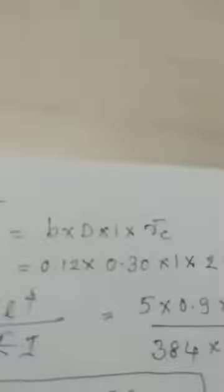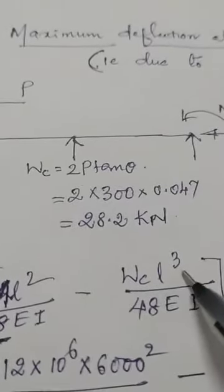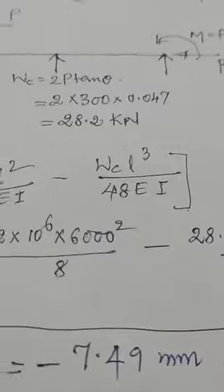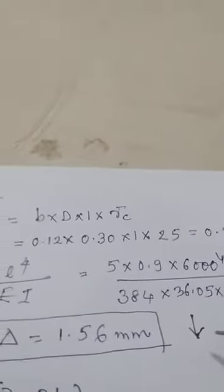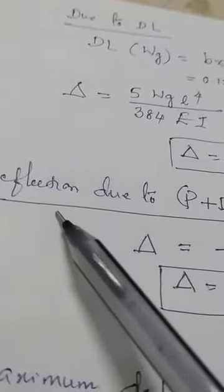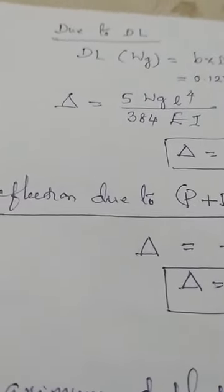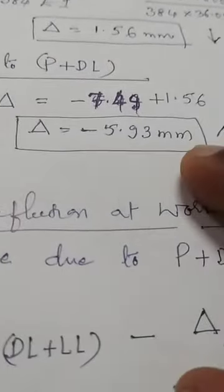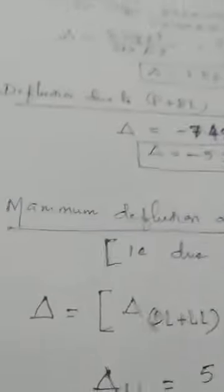Dead load is calculated separately as b × d × 1 × density. Due to prestressing force, the formula is ML²/8EI minus Wc·L³/(48EI), giving a delta due to prestress of −7.49 mm. The dead weight creates a downward deflection using 5WL⁴/(384EI), giving 1.56 mm. The net deflection due to P and dead load is −7.49 + 1.56 = −5.93 mm (upward).